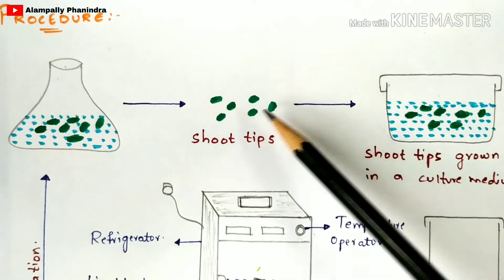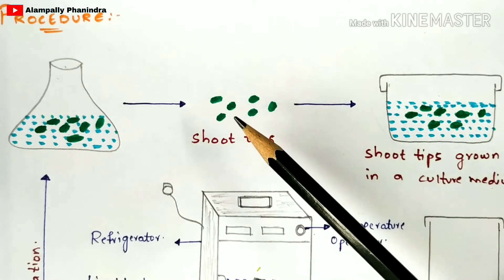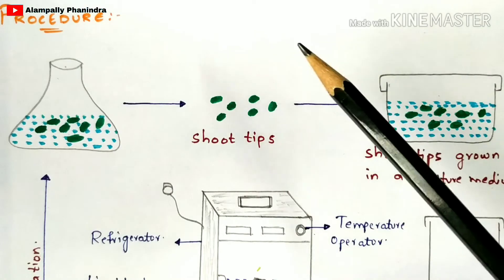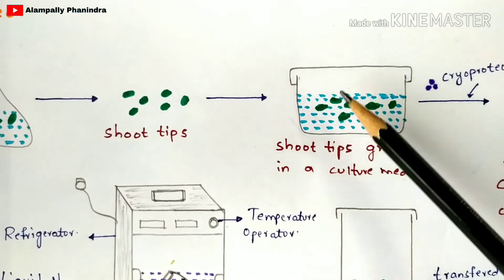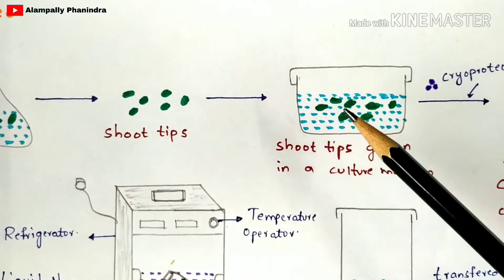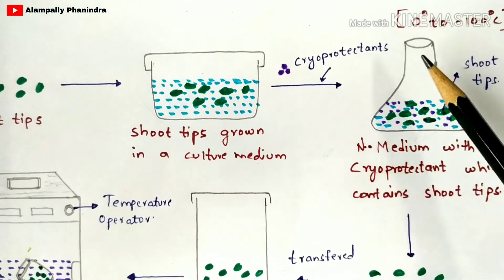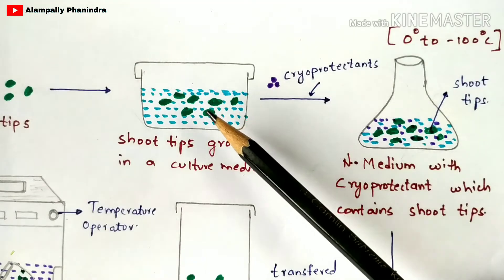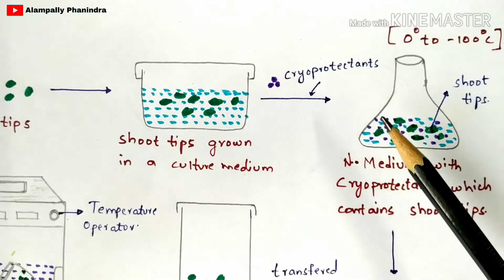Once you select the biological material, you are going to remove the bacteria present on it through surface sterilization. Surface sterilization is a process where we wash these shoot tips with certain chemicals so that the bacteria on the surface gets removed. Once the shoot tips are free from bacteria, you take a beaker, add culture medium, and add the shoot tips into that culture medium so they are properly maintained. Then in the next step, you take a test tube and add the shoot tips along with the culture medium into it.